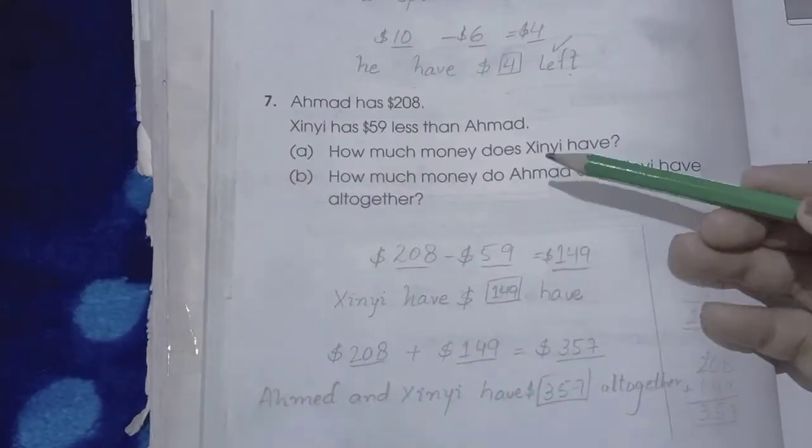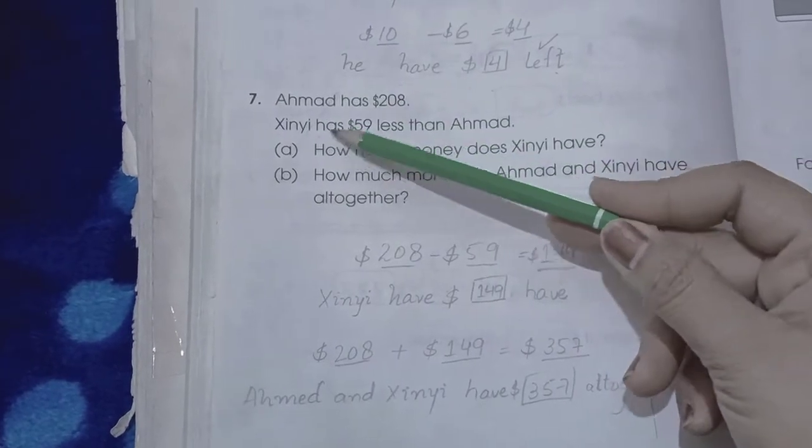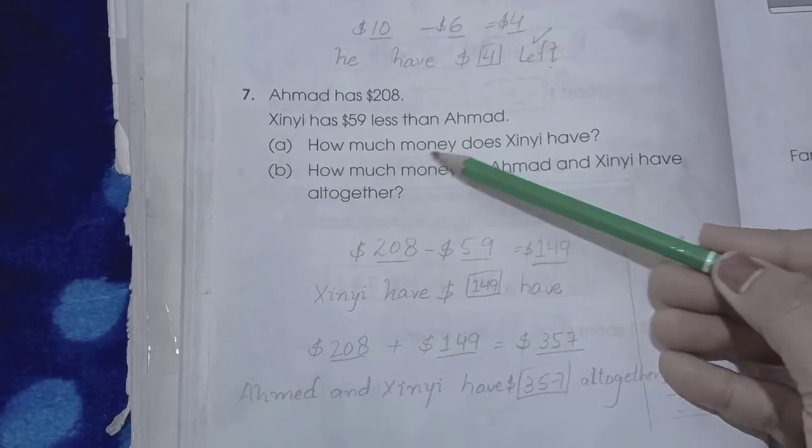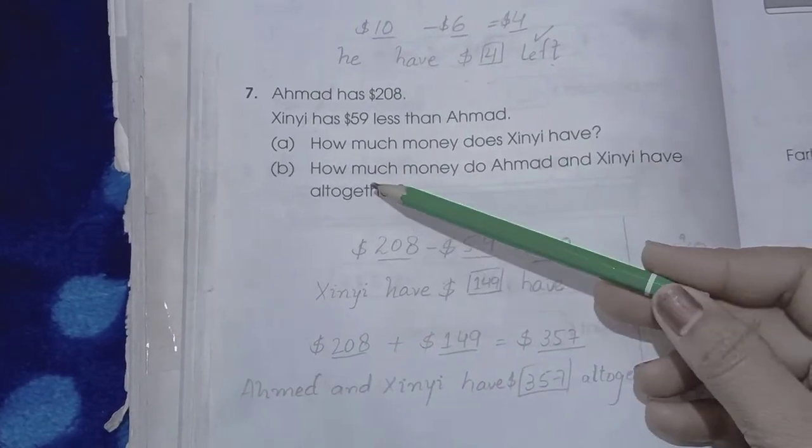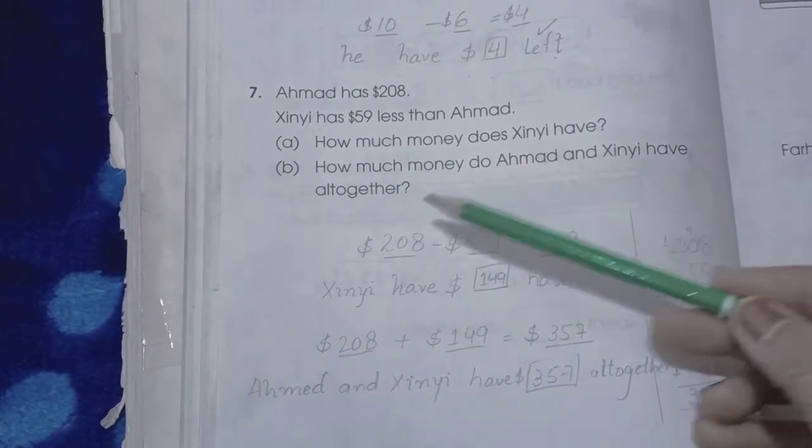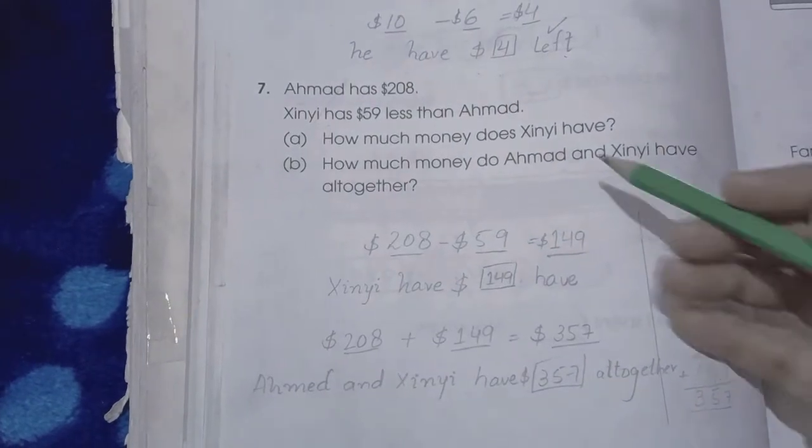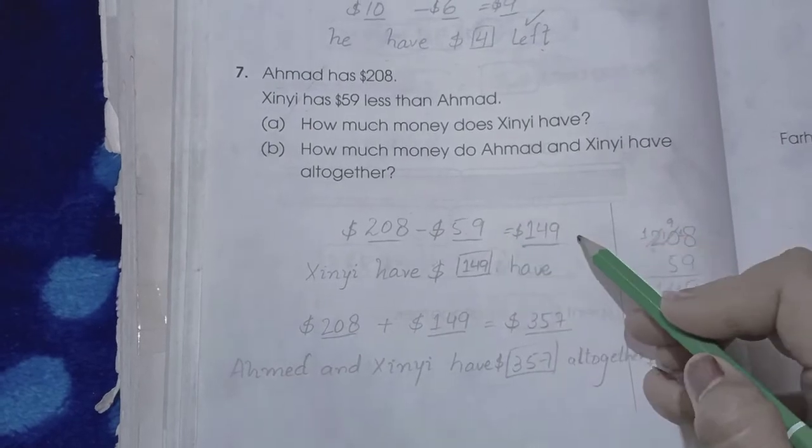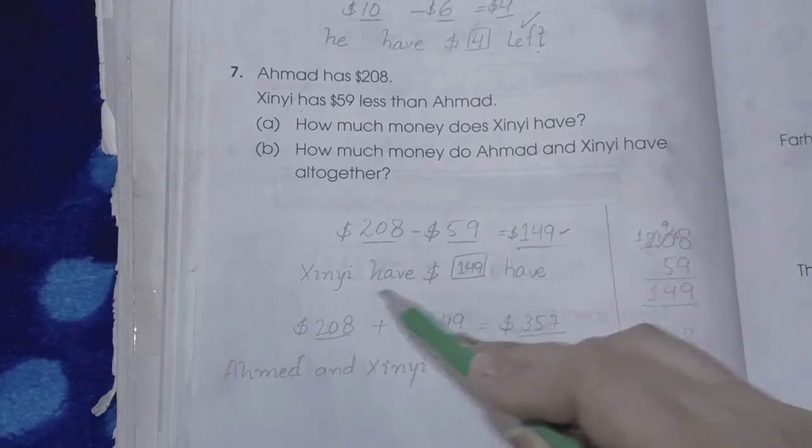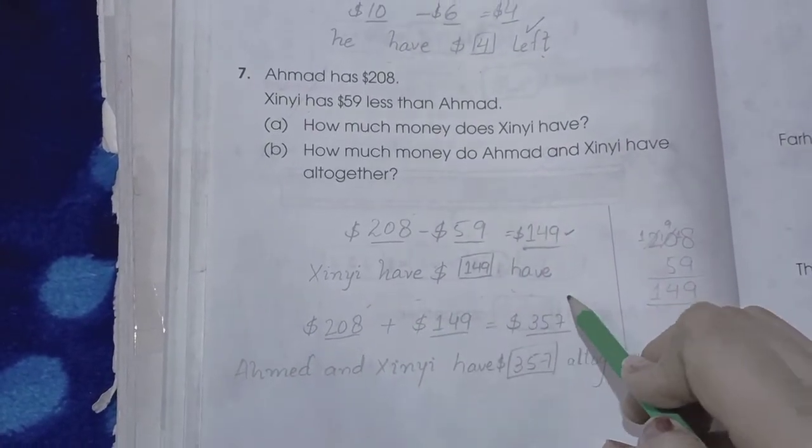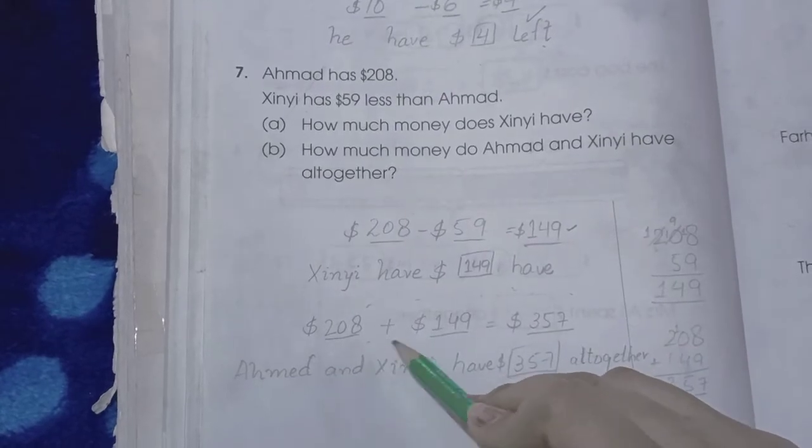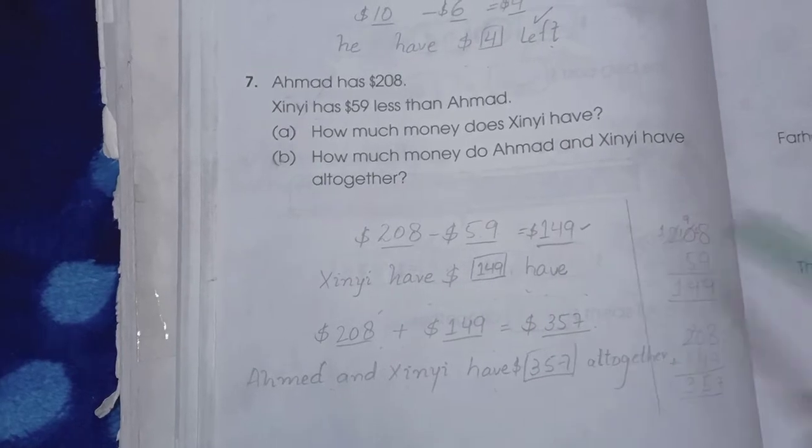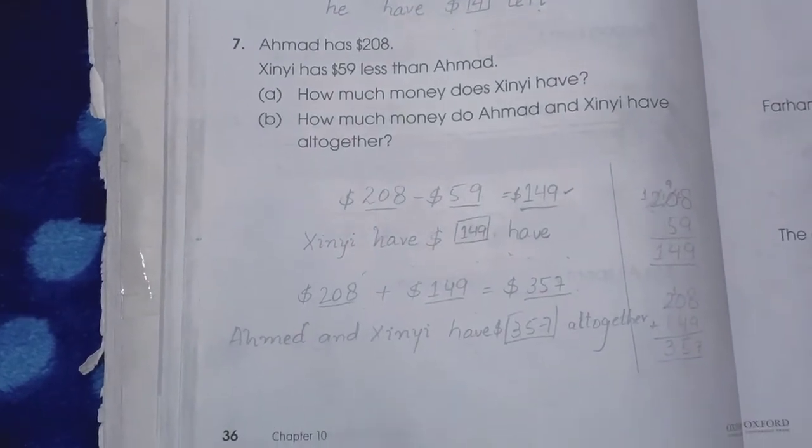Number seven: Ahmed has $208. Zini has $59 less than Ahmed. How much money does Zini have and how much money do Ahmed and Zini have altogether? Simply we subtract 208 minus 59. The answer is $149. Zini has $149. Now 208 plus 149 is 357. Ahmed and Zini have $357 altogether.